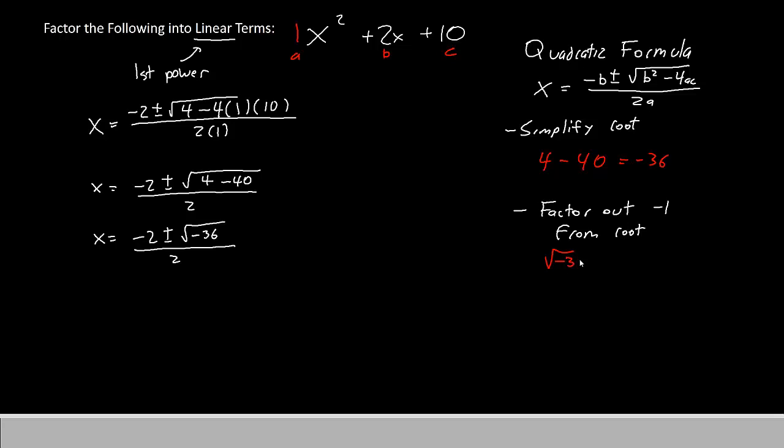So that our square root of negative 36 will become root 36 times root negative 1. So we'll have X equals negative 2 plus or minus root 36 times root negative 1, all divided by 2. However, we do know that root 36 is actually just 6, and root negative 1 can be rewritten as i. So our equation now becomes X equals negative 2 plus or minus 6 times i, still all divided by 2.